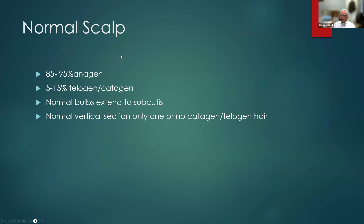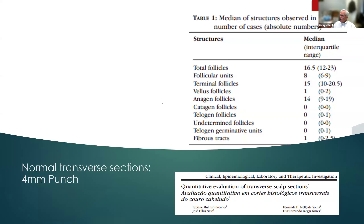Depending on who you read, 85 to 95% of hairs are anagen. So if only 5% of hairs are not anagen, and you have six hairs on the biopsy, you would need around 18 or 20 biopsies to find just one telogen or catagen hair. Normal bulbs extend to the subcutis in a vertical section. In horizontal sections, we see somewhere between 16 and 20 follicles — mostly terminal follicles, mostly anagen, with a rare catagen or telogen follicle. On average, about one.